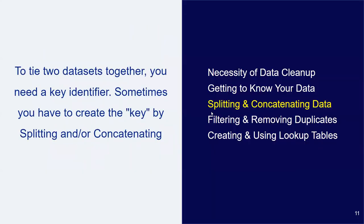Now that we have a sense of what we're working with, a first critical step is to figure out how to tie your two datasets together. For this, you'll need to have a unique identifier — something that goes to the individual student or user level, like their username, email address, or student ID number. Each file needs to have a field that is formatted exactly the same, and sometimes you need to do a little bit of work to make this happen, which is where splitting and concatenating come in.